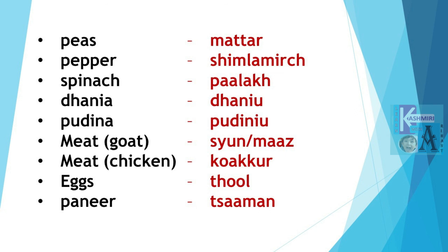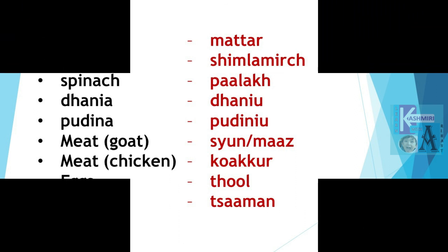Goat meat or lamb is Siun. Siun. Maaz. Maaz. Chicken meat is Kokur. Kokur. Eggs are Thool. Thool. And finally, Paneer is Caaman. Caaman.